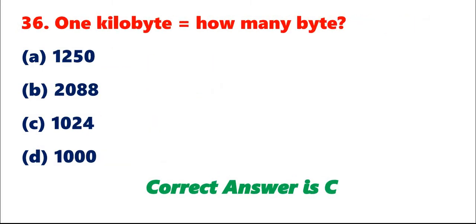Question 36: 1 kilobyte equals how many bytes? A. 1250. B. 2088. C. 1024. D. 1000. Correct answer is C.